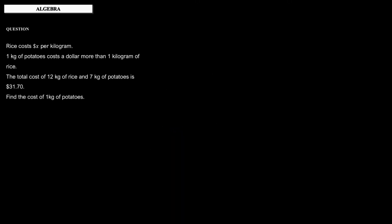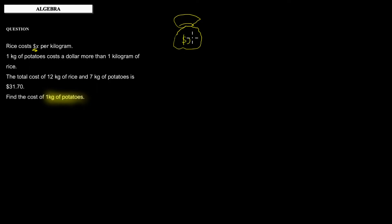In this question we want to figure out the cost of one kilogram of potatoes. First, let's ask ourselves what do we already know. We know that rice costs x dollars per kilogram — we don't know exactly how much, but it costs x dollars per kilogram. We also know that a kilogram of potatoes costs a dollar more than one kilogram of rice.